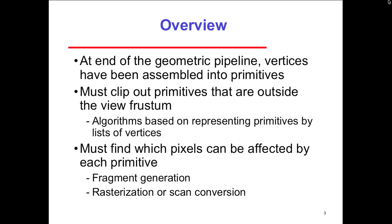At the end of the geometric pipeline, the vertices have been assembled into primitives, so we must clip out primitives that are outside of the view frustum. After we put everything through the pipeline and generated what we need, we have a view that will be shown on screen. Clipping gets rid of what is not being shown, takes it out of memory, makes it lighter weight and easier to display. The algorithms are based on representing primitives by lists of vertices.